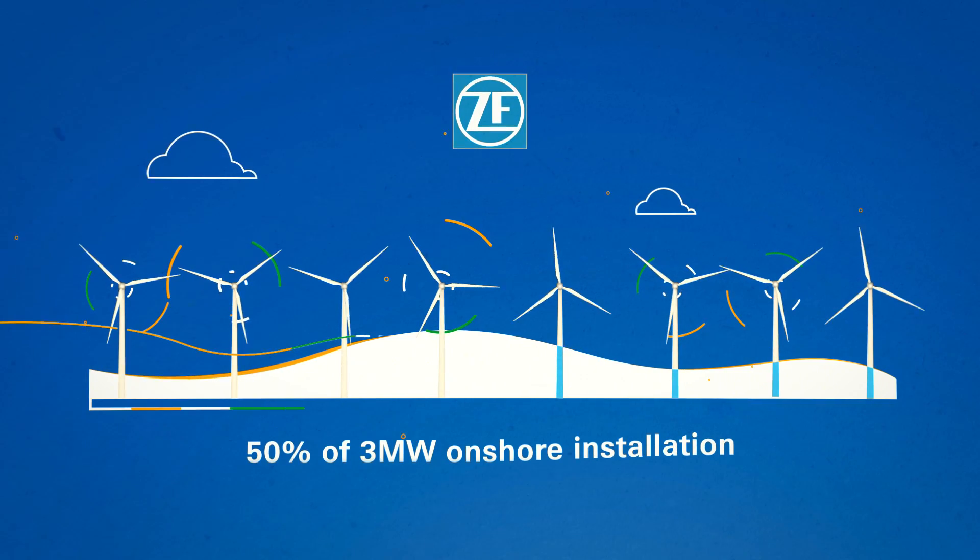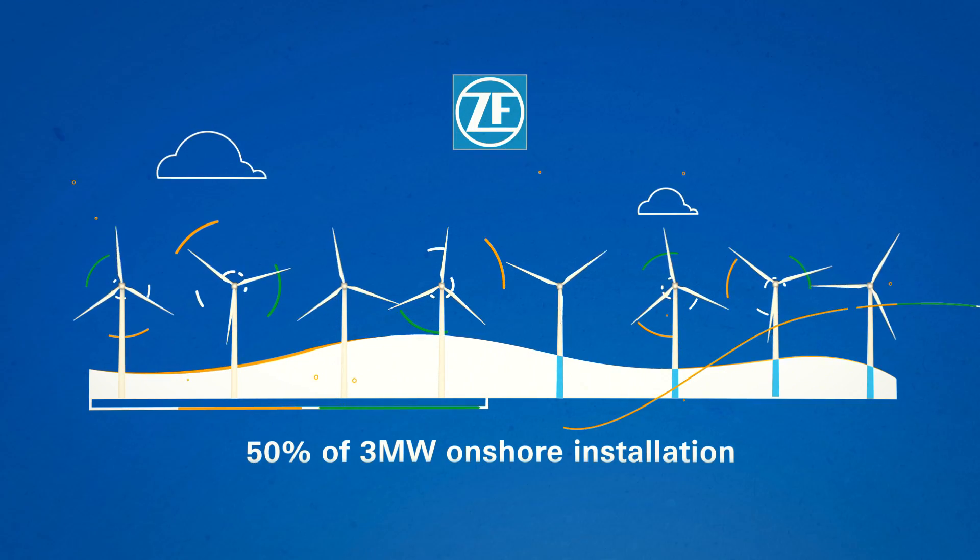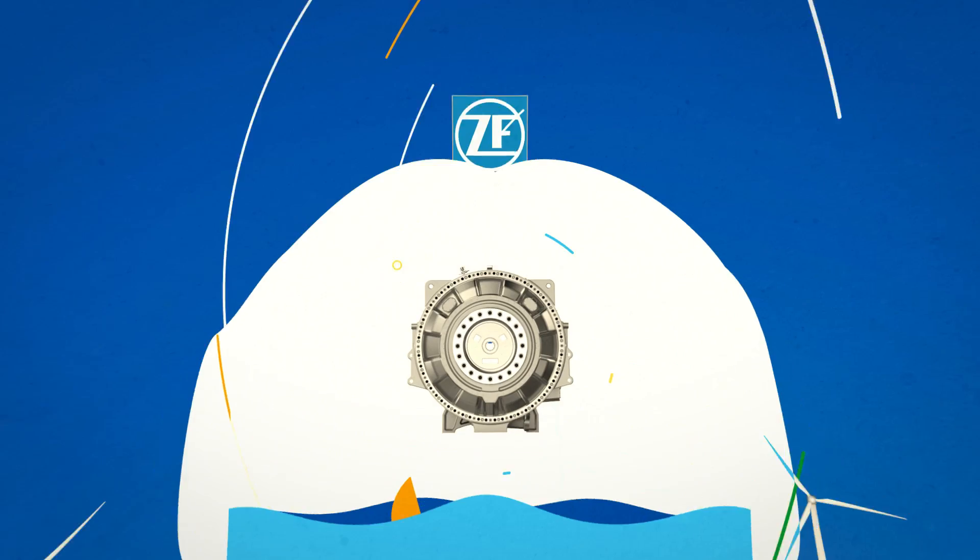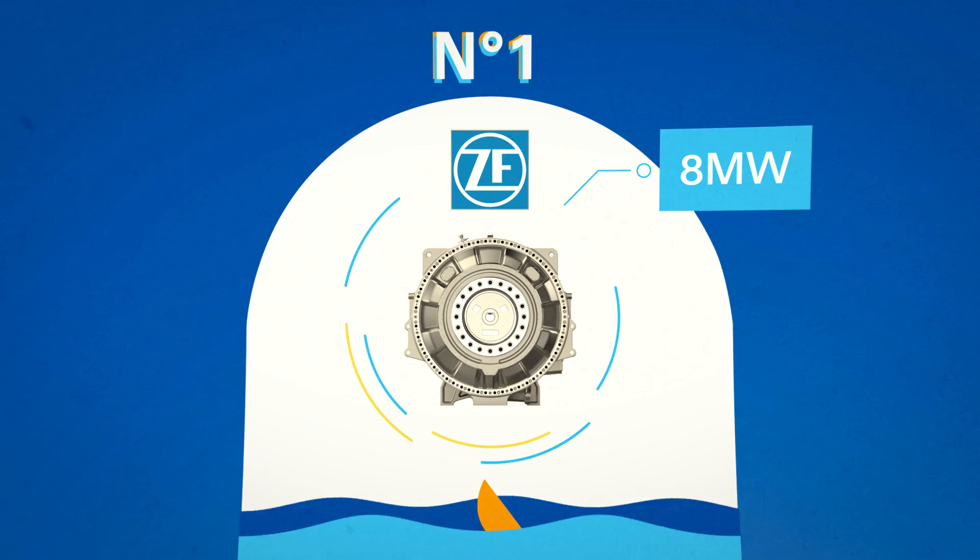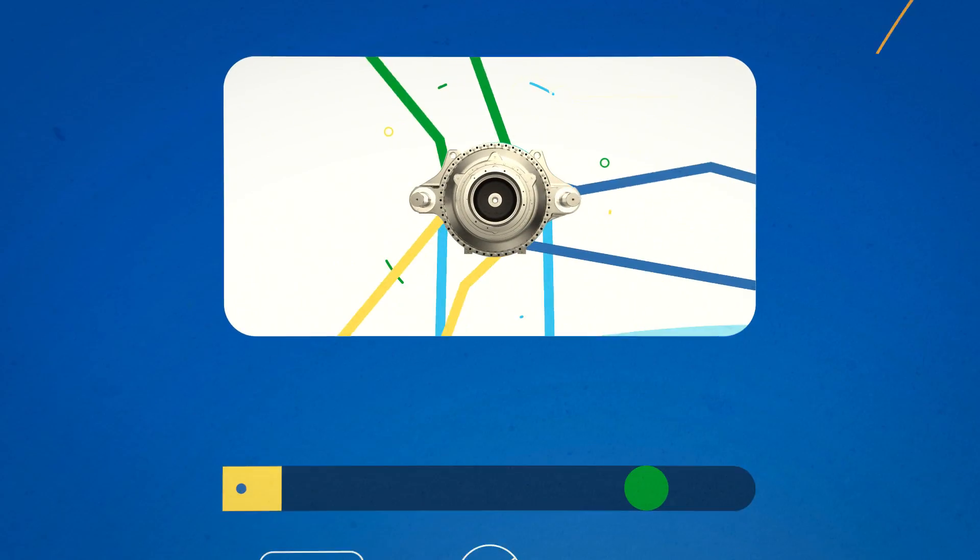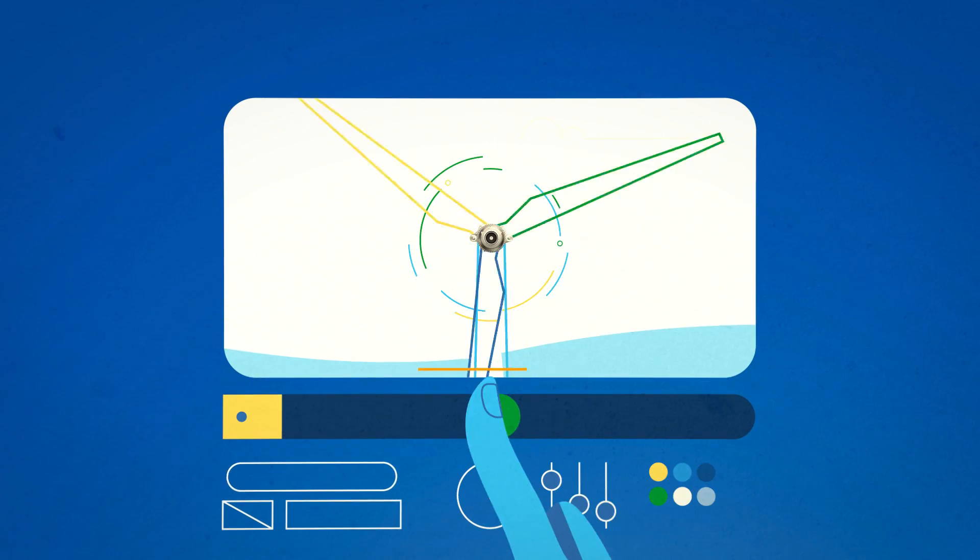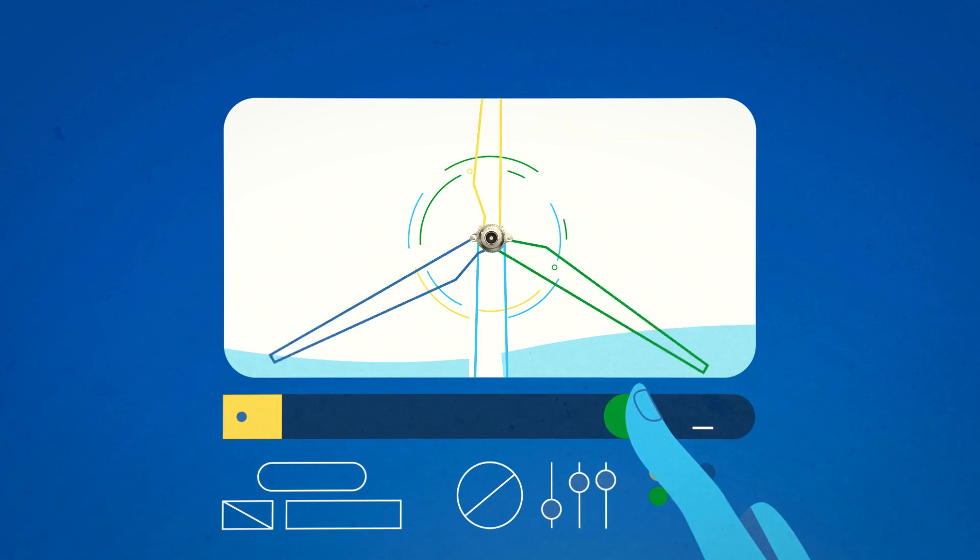ZF powers more than 50 percent of the global three megawatts onshore installation and is the first supplier with a serial production of eight megawatt gearboxes for offshore. That's why we're uniquely positioned to make intelligent and scalable wind energy production a reality today.